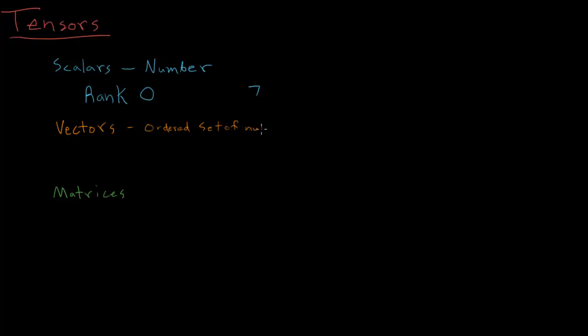Right. So 2, negative 13, right? This is a vector. And it can be two numbers long. It can be however many numbers long you want it to be. And this is called the rank one tensor.